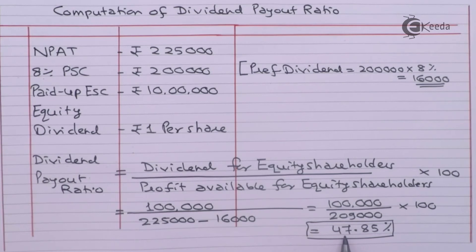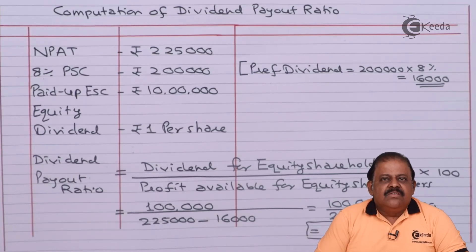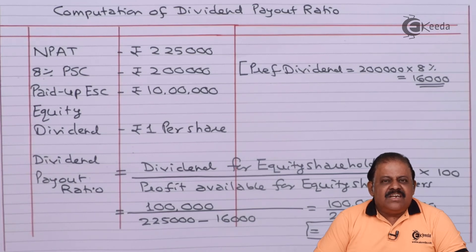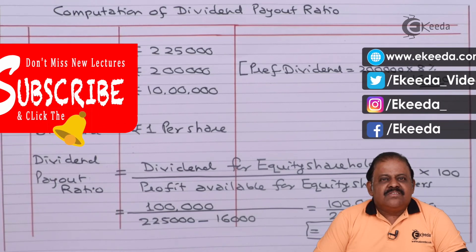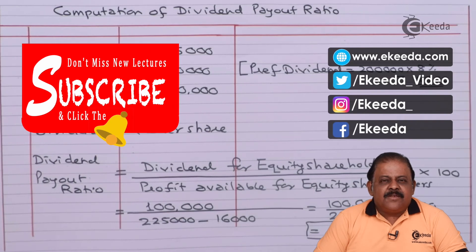In this video we have learnt the concept of dividend payout ratio — that is, the relation between equity shareholders' earnings and the dividend paid by the company to those equity shareholders. Thanks for watching this video. Stay tuned with Ikeda and subscribe to our channel Ikeda. Thank you. Bye.